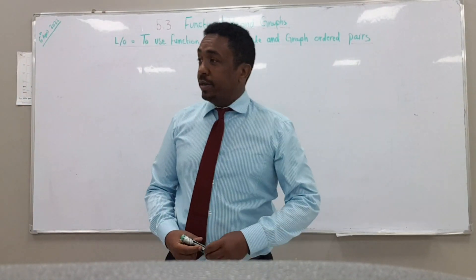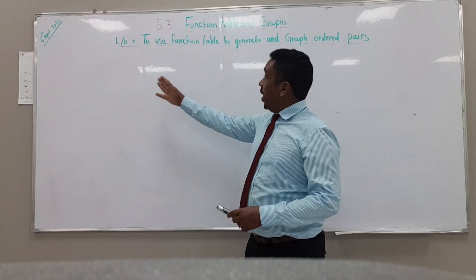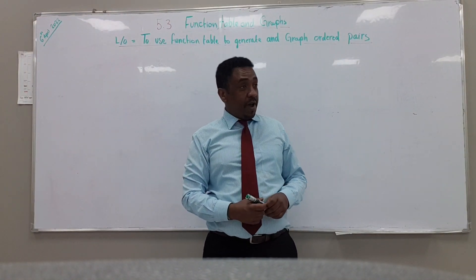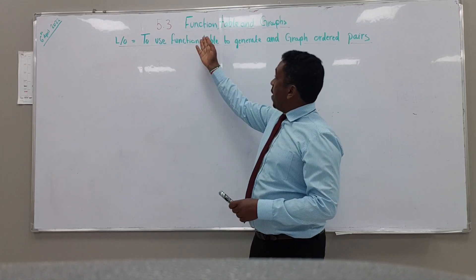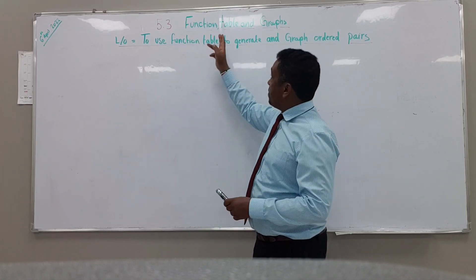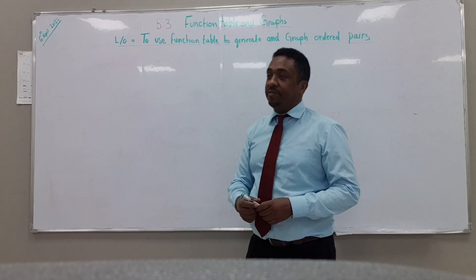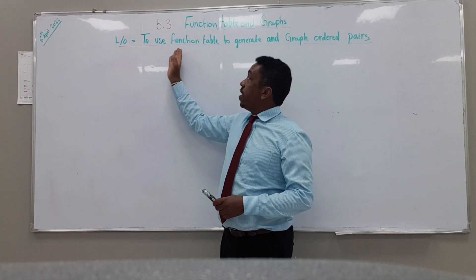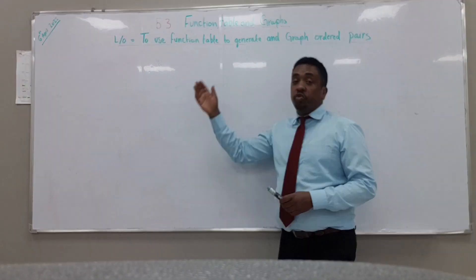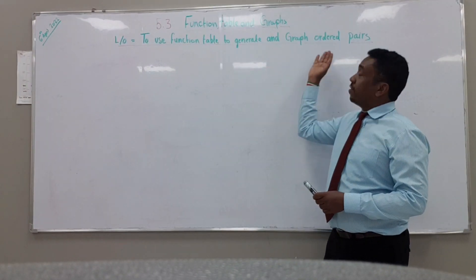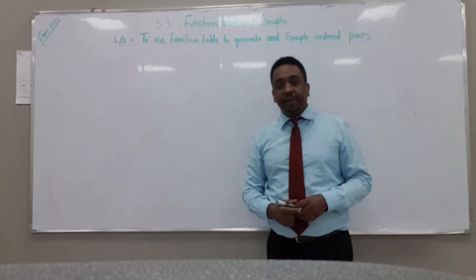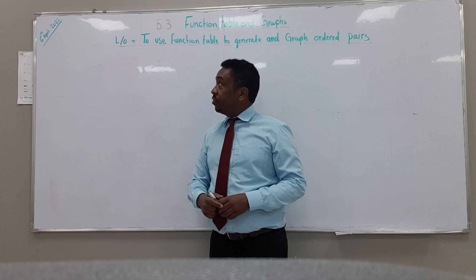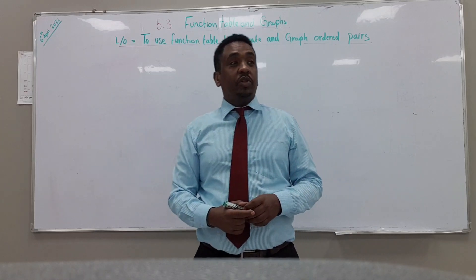Good morning everyone. Today we are doing lesson 3 of chapter 5. The title of the lesson is function tables and graphs. The learning objective is to use a function table to generate and graph ordered pairs. Today's date is the 6th of April 2022.